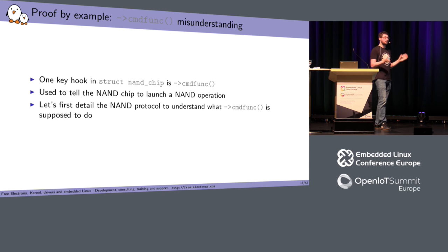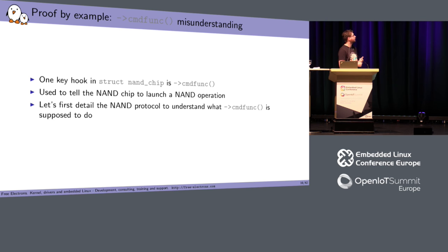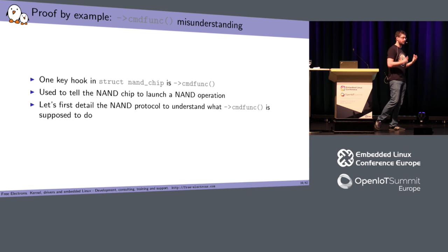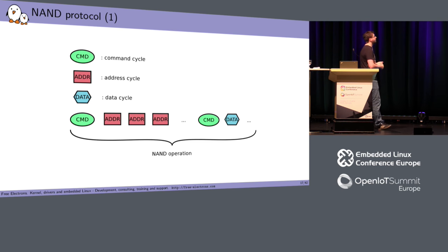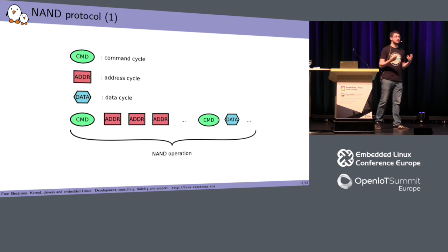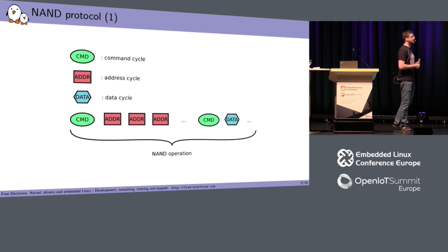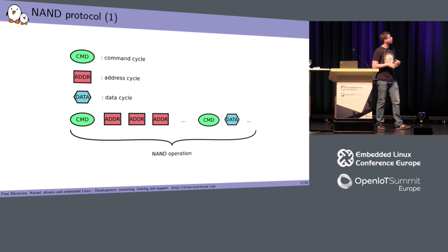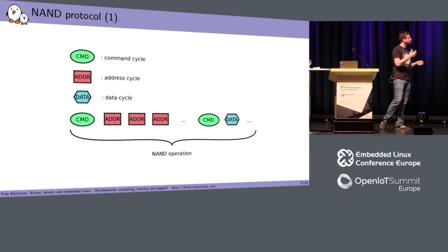Let's take an example — probably the most abused method in the NAND framework: the command function method. This is the method used to ask the NAND controller to send a command to a specific NAND chip. Before digging into command function, let's see what a NAND operation is. A NAND operation does things like read a page, write a page, erase a block, or read the NAND ID. A NAND operation is formed of one or several command cycles, one or several address cycles, and zero or one data cycles.